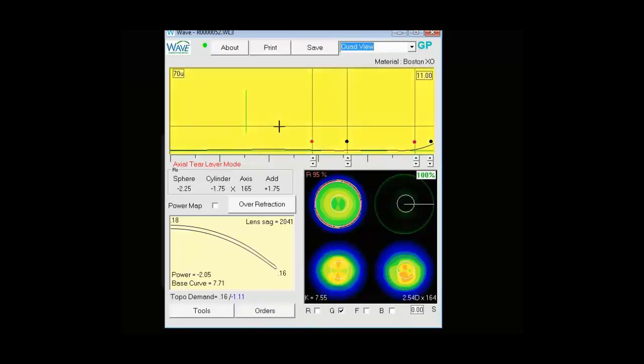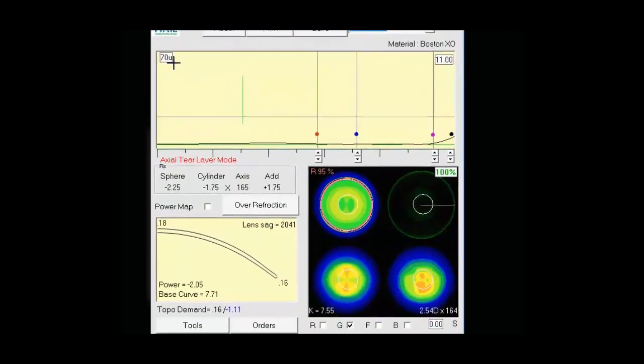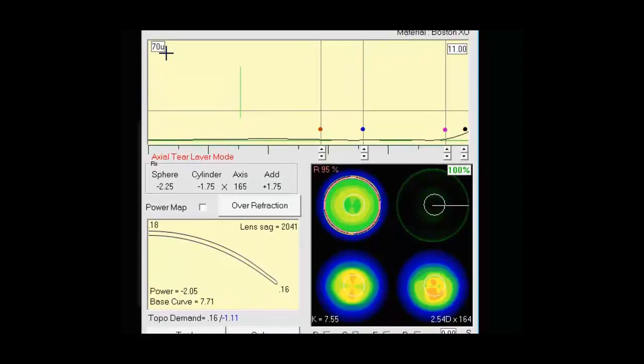Next, we'll move into the tier layer clearance display, which is this big box in here. On the upper left, you'll see an indicator that shows 70 microns. That's the depth between the base of the cornea, which is down here, and the top of this display screen.